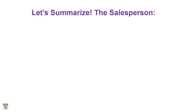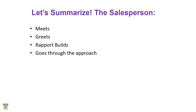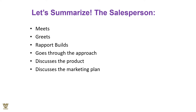Let us summarize: first we meet the person, then we greet the person. In greeting the person, we are already establishing the customer on a higher pedestal, which starts to build rapport by finding shared interests common to both the customer and the salesperson. The salesperson then goes through the approach and discusses the product. So: meeting, greeting, rapport building, approach, then discussing the product.